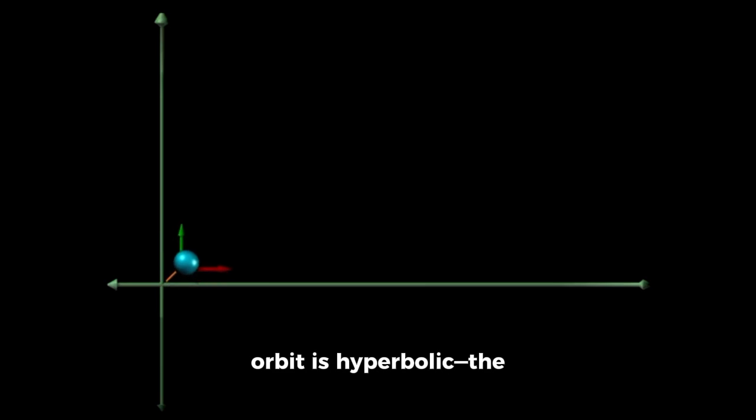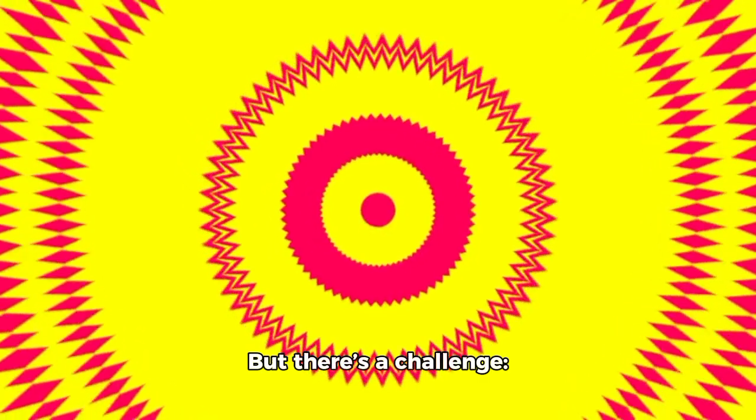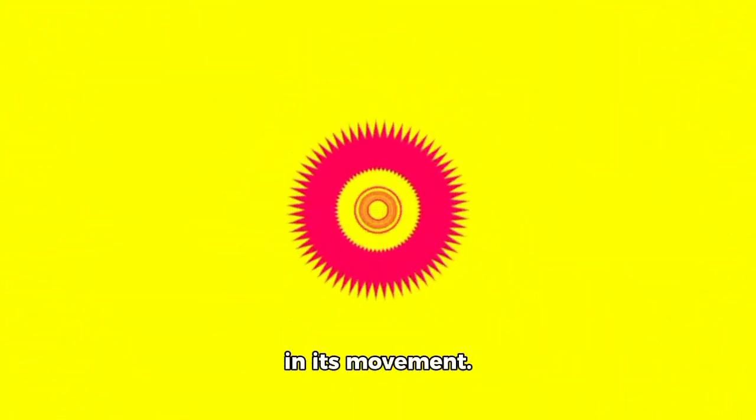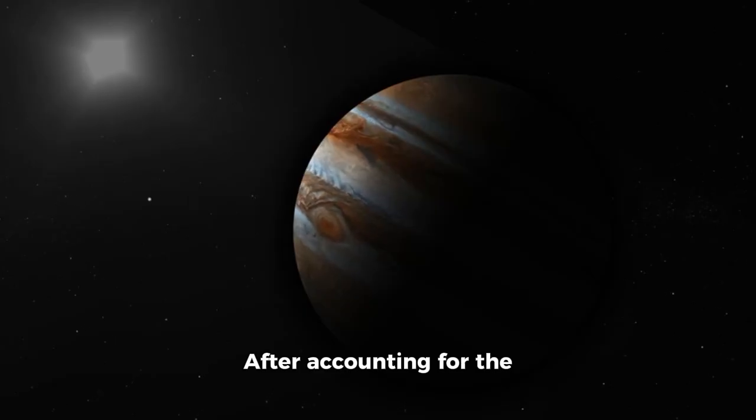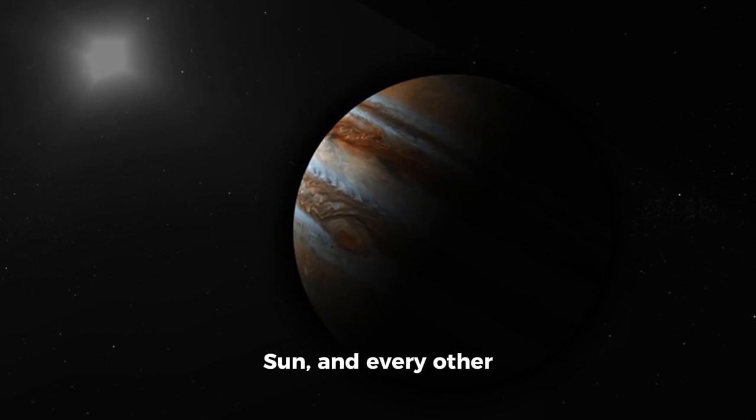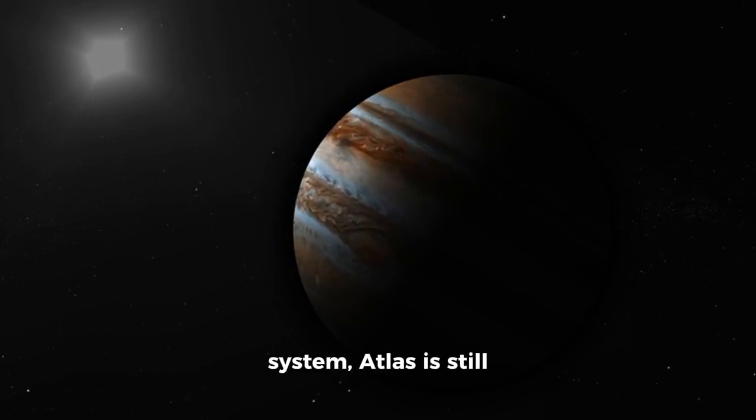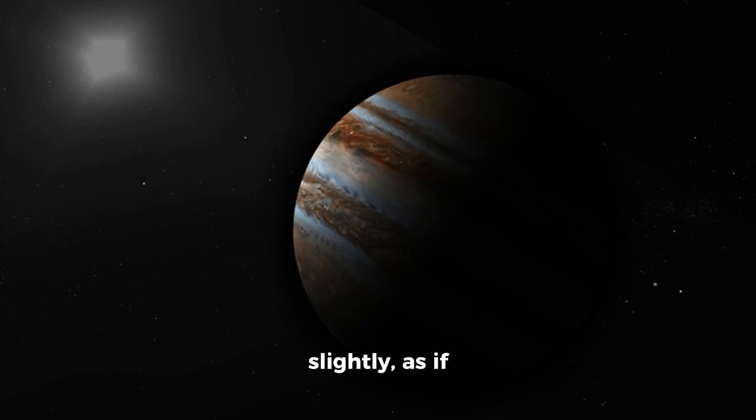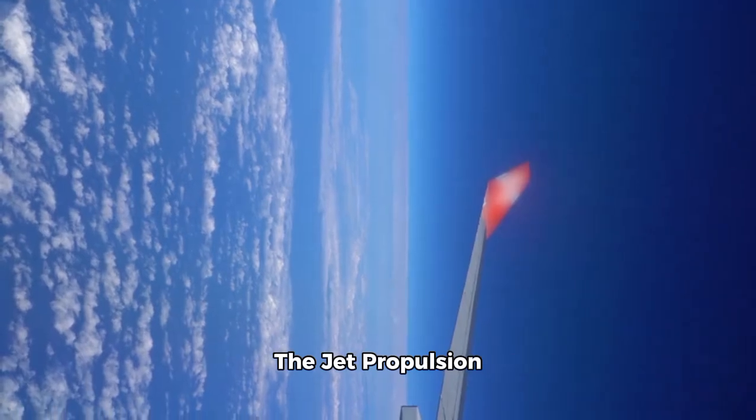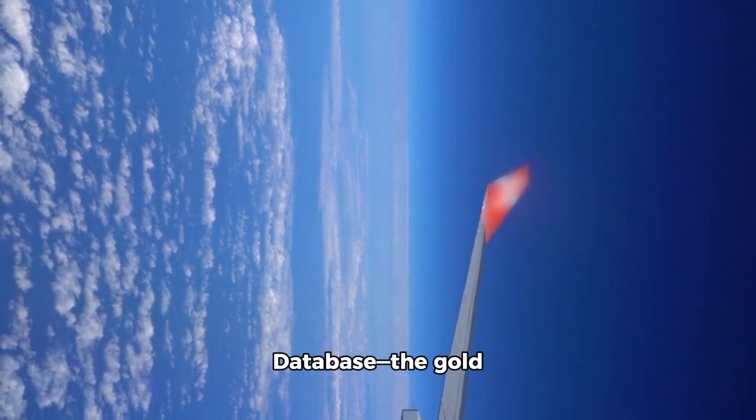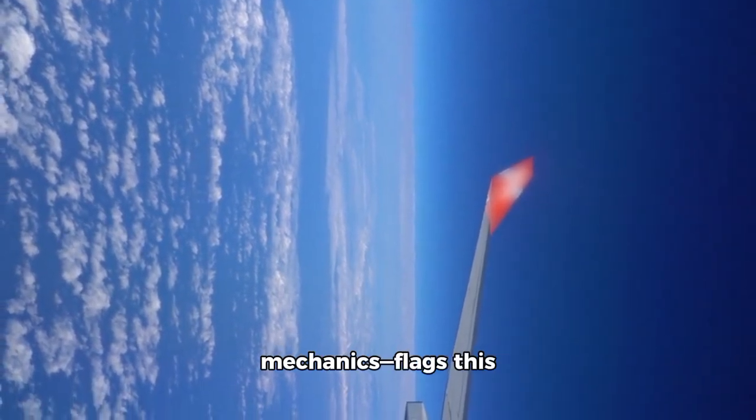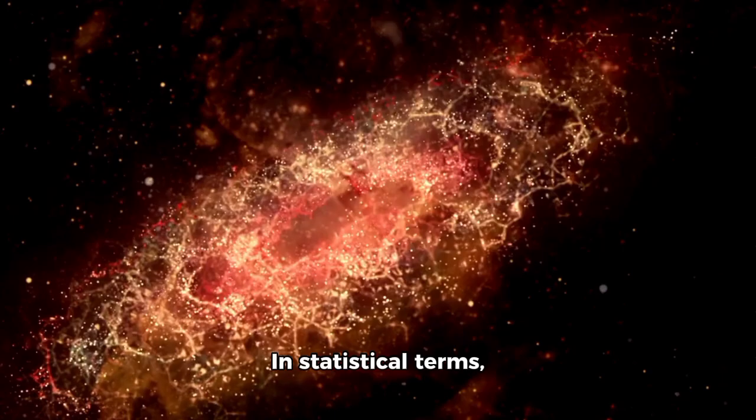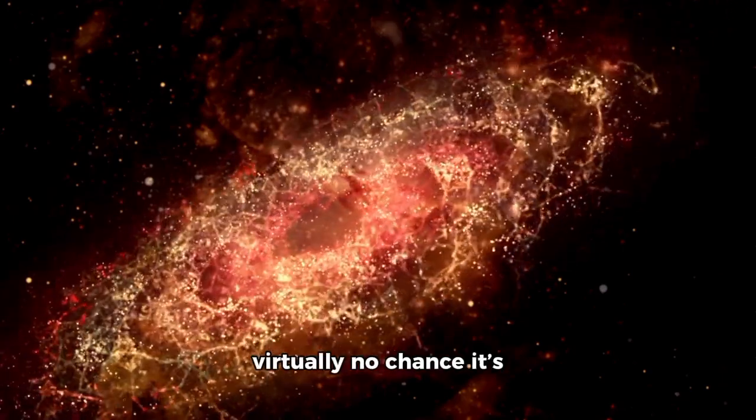The third anomaly pushes this event to the very edge of our understanding. Officially, the object's orbit is hyperbolic—the mathematical term for a path that is not bound by our sun's gravity. But there's a challenge: a tiny, persistent nudge in its movement. An impulse that doesn't fit any known gravitational model. After accounting for the pull of Jupiter, the sun, and every other body in our solar system, Atlas is still accelerating ever so slightly, as if something is gently pushing it. The Jet Propulsion Laboratory's small body database flags this anomalous acceleration as a 4.3 sigma outlier. In statistical terms, that means there is virtually no chance it's a measurement mistake.